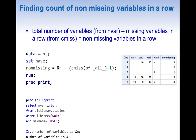In conclusion, by using nvar from dictionary.tables and CMISS, we can find the count of non-missing variables in a row. If you liked this topic, please give it a thumbs up, share, and subscribe — your like, share, and subscribe mean a lot to me. Thank you.